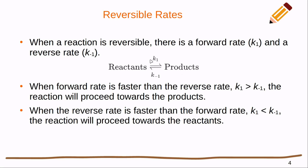When our forward rate is larger than our reverse rate, we're going to see the reaction proceed from the reactants towards the products.